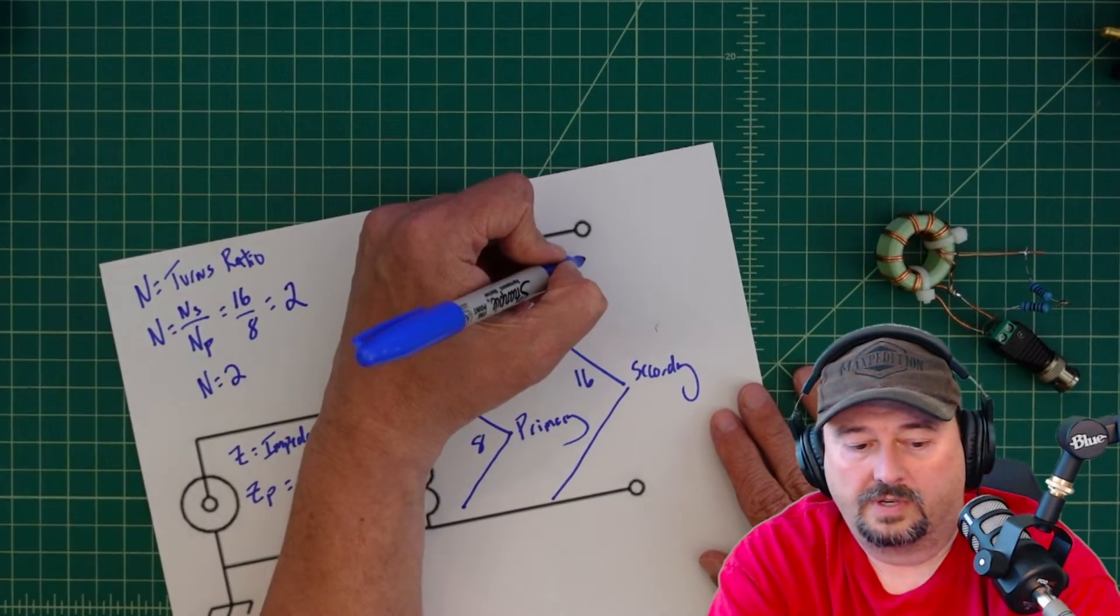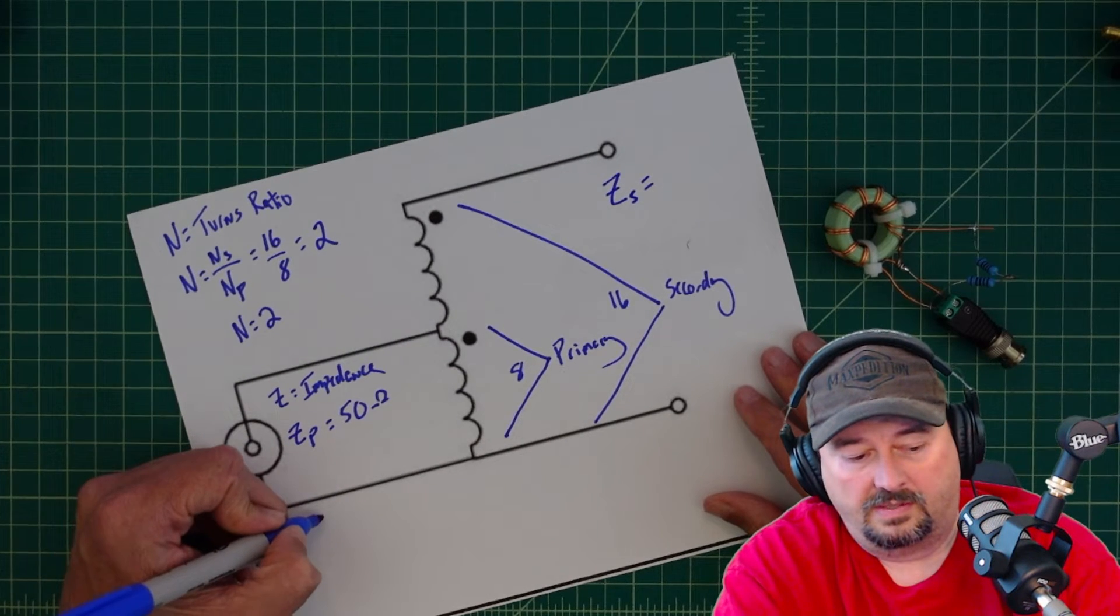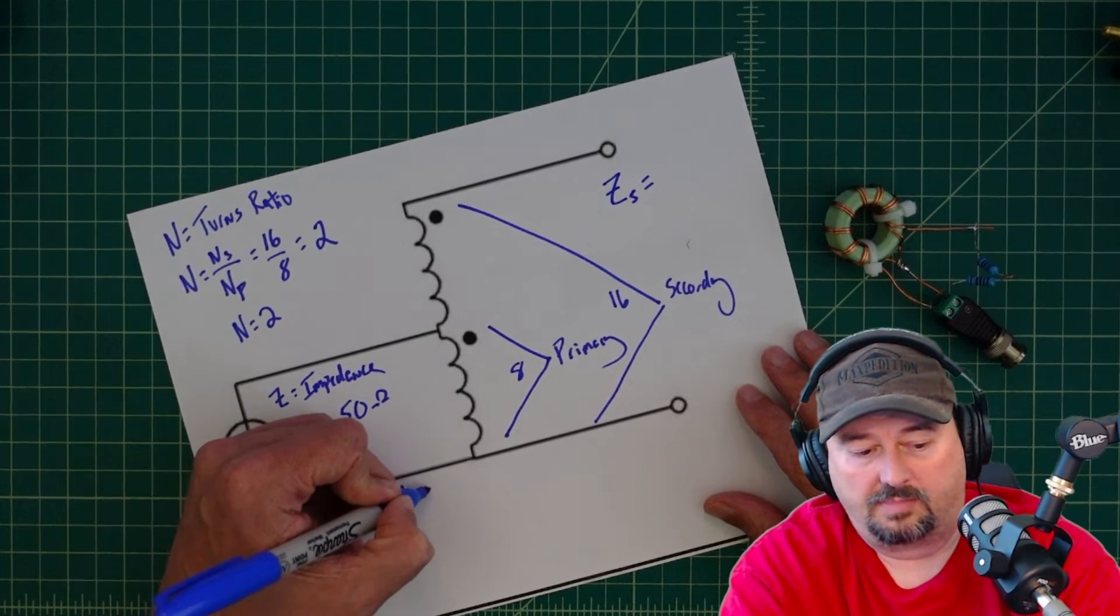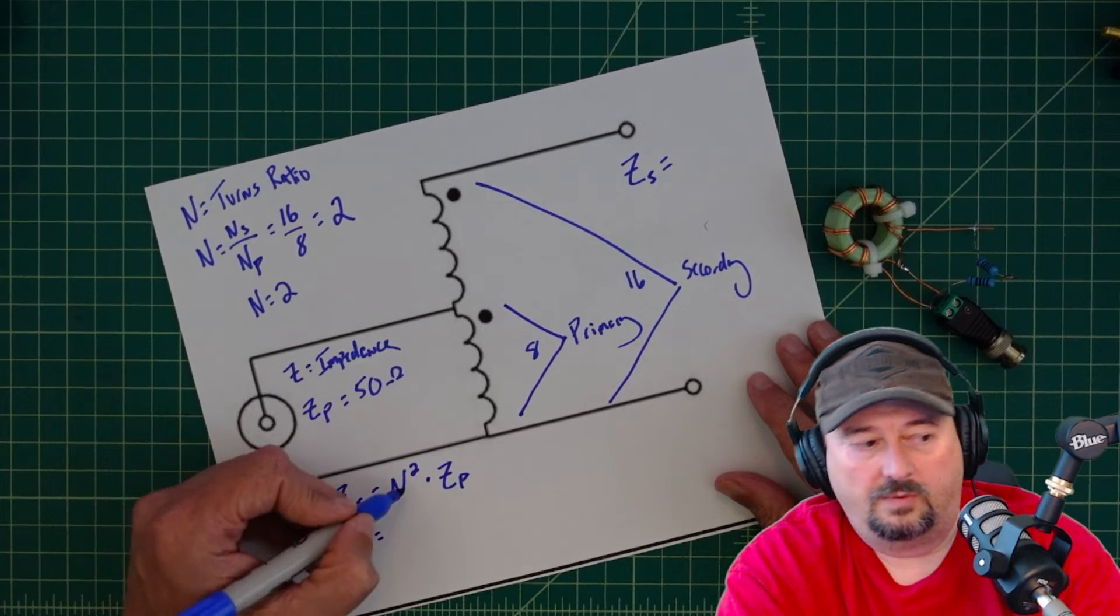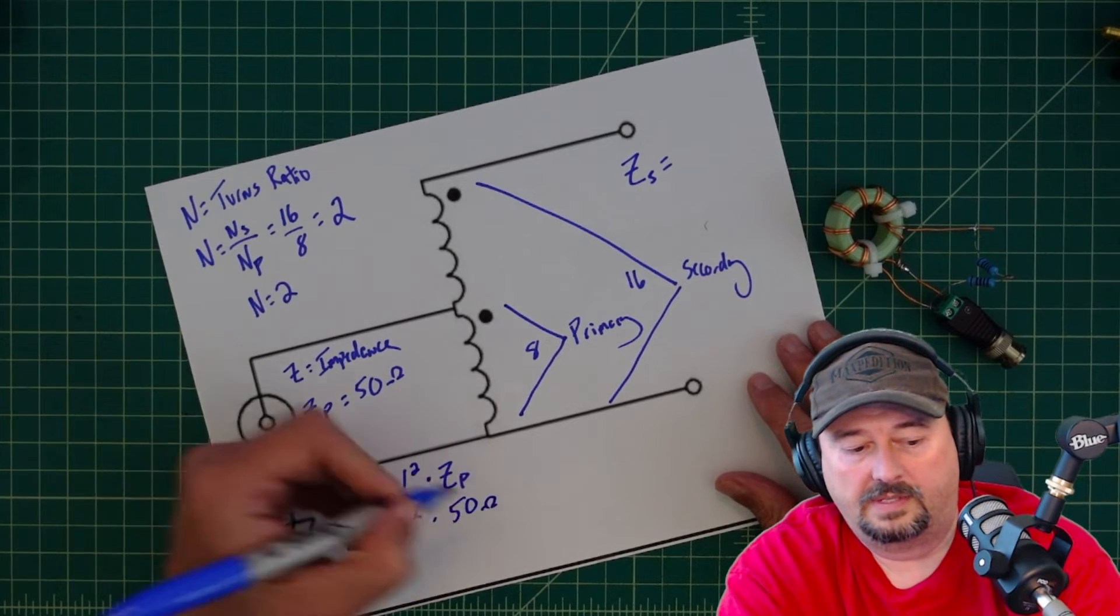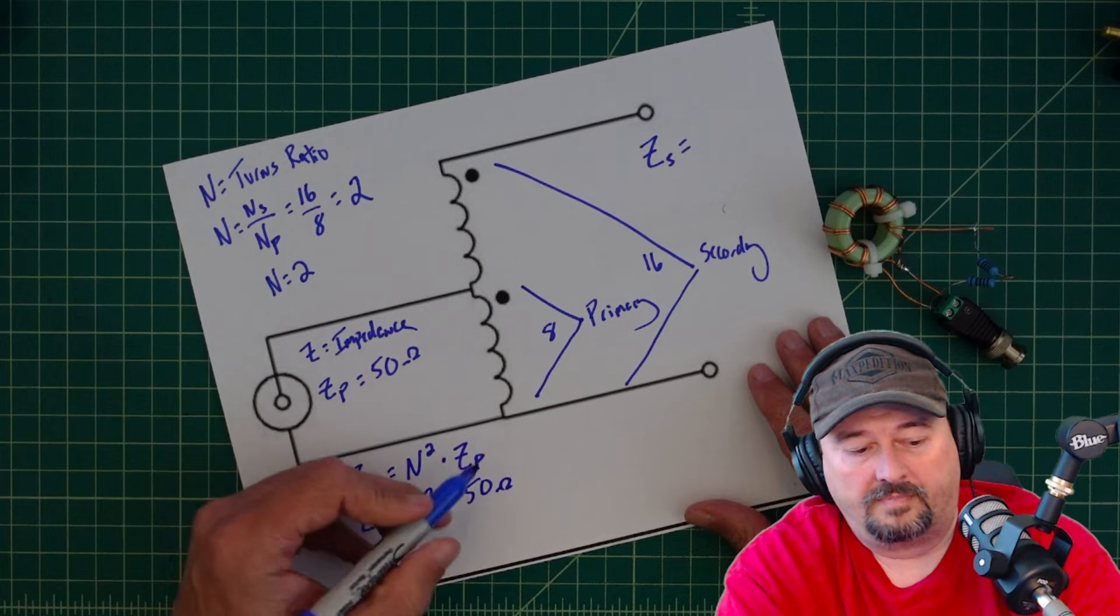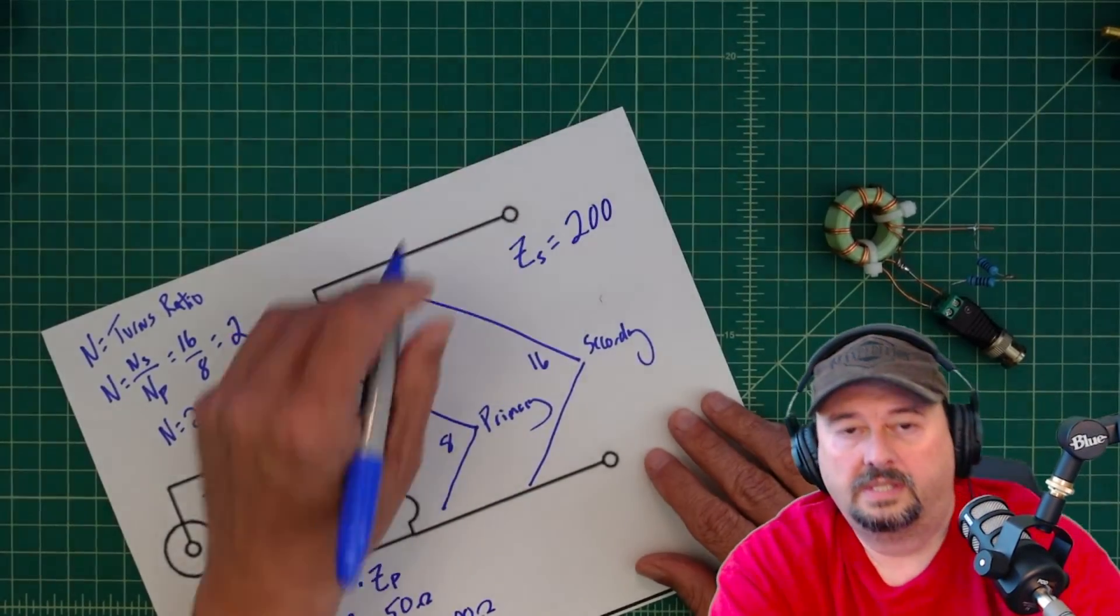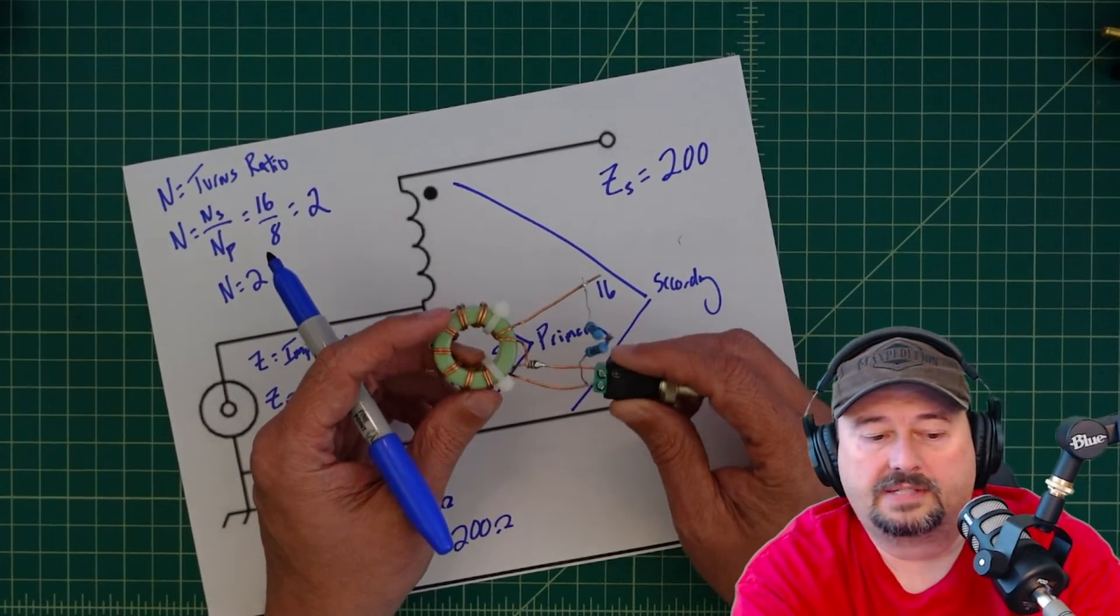So when we have this what we want to figure out is what our impedance on the secondary is going to be equal to. And that's how you calculate how your toroid is going to perform. So there's a formula for that and that is impedance on the secondary is equal to the square root of your turns ratio times the primary impedance Zp. So what we know is that the impedance for our secondary is equal to 2 squared right? Because our turn ratio is 2 so it's 2 squared times 50 ohms. Because we know that our primary impedance is 50 ohms. So our secondary impedance is 4 times 50 which is equal to 200 ohms.